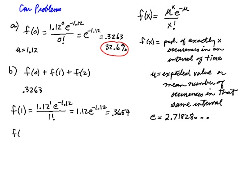And I also need f(2), so that would be 1.12 squared, e to the minus 1.12 over 2 factorial. 1.12 squared is 1.2544, e to the minus 1.12 over 2 factorial is 2.